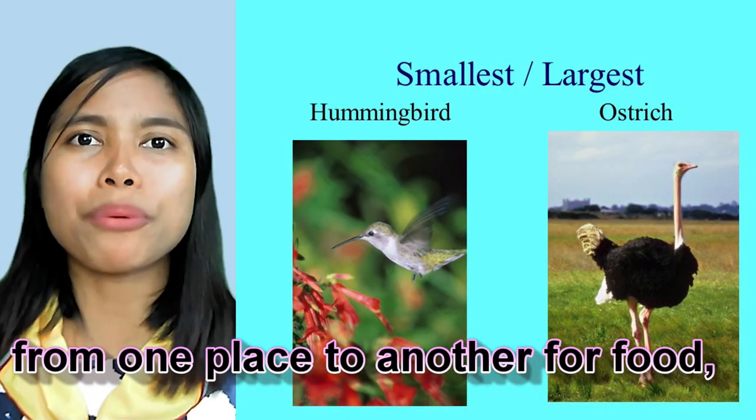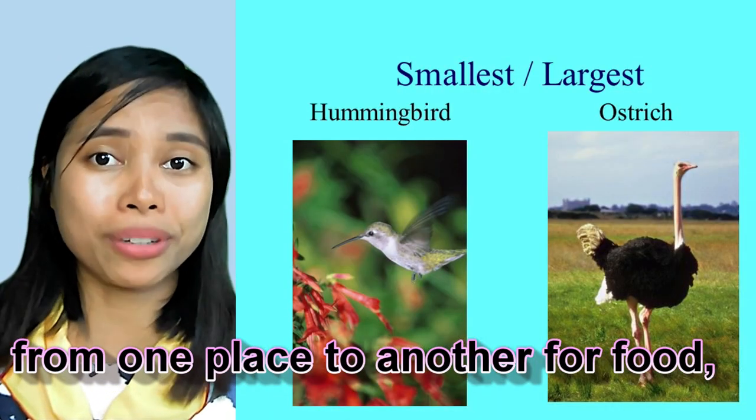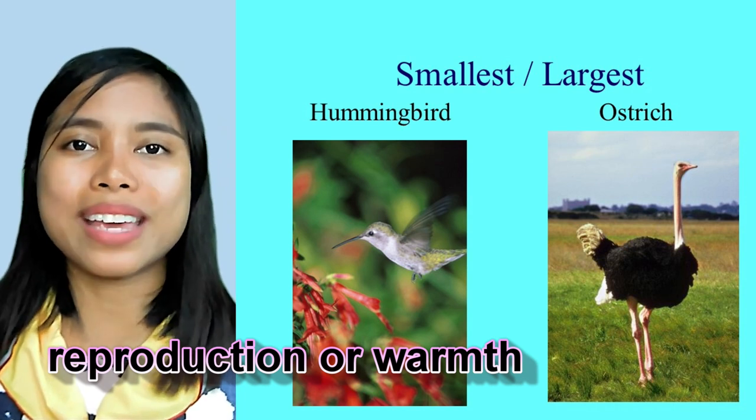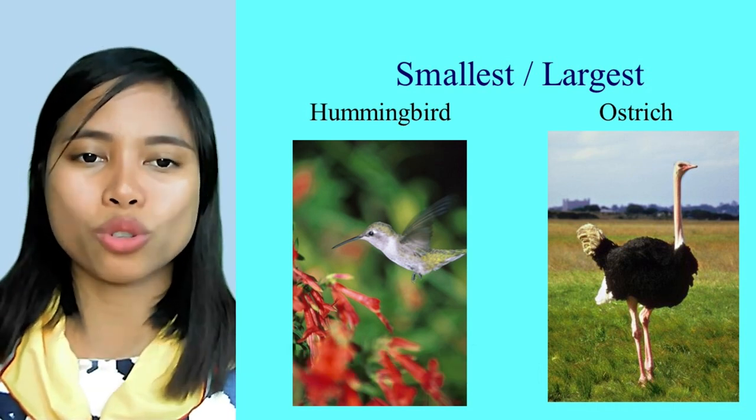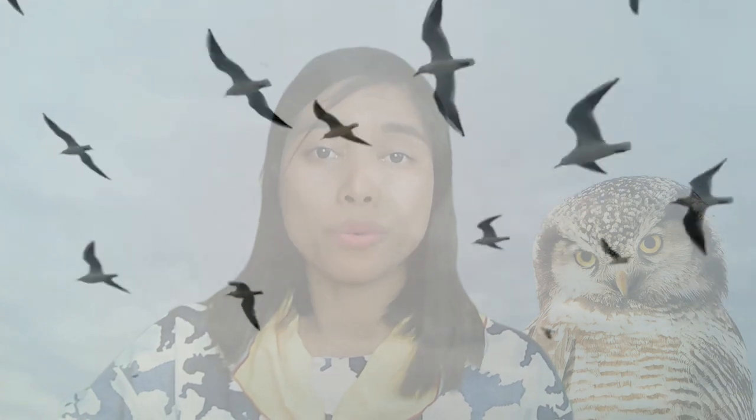The smallest bird is the hummingbird, while the largest bird is the ostrich. When it comes to migration, birds make a regular periodic journey from one place to another for food, reproduction, or warmth.